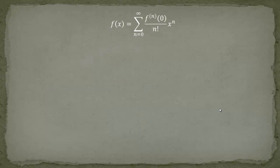Let's have a look at the Taylor series — or better, the Taylor series evaluated at x equals 0. The formula is pretty simple. We have to sum from n equals 0 to infinity all the derivatives evaluated at x equals 0. We also have to divide by n factorial and then multiply with x to the n. It's pretty easy and fast.